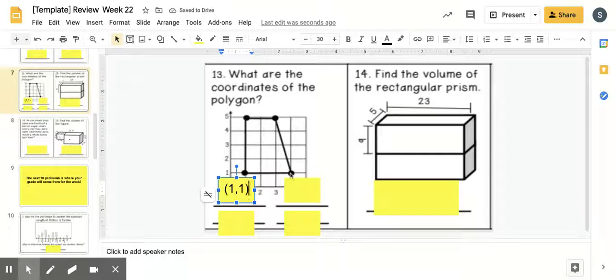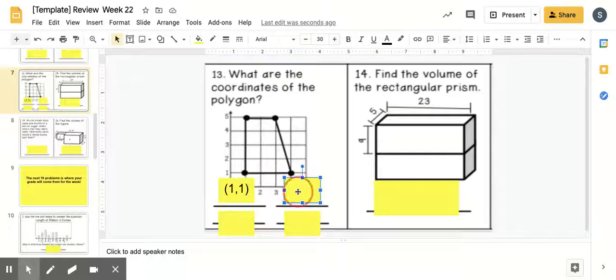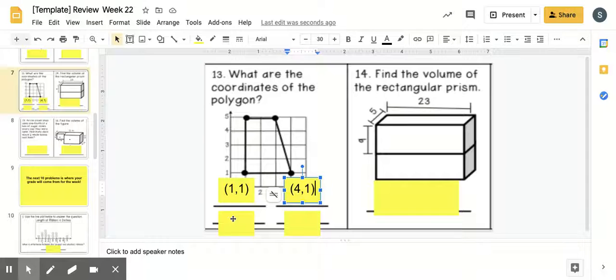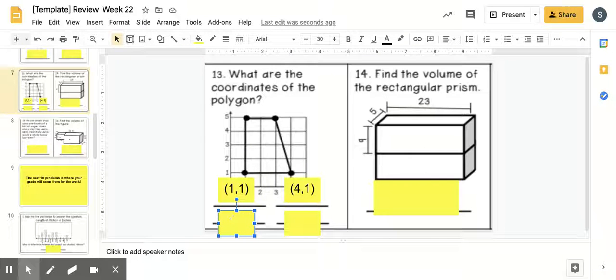If we move to the right, the coordinates here are 4, because we go right 4 and up 1. So, you're going to use parentheses, 4, 1, close your parentheses. If we go to this top corner right here, we go to the right 3 and up 5. So, our next coordinate will be parentheses, 3, 5, close parentheses.